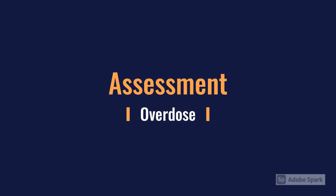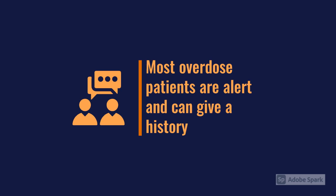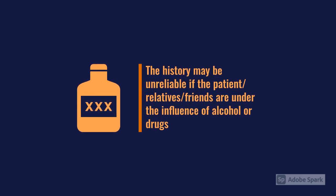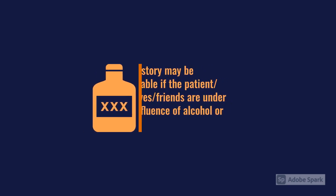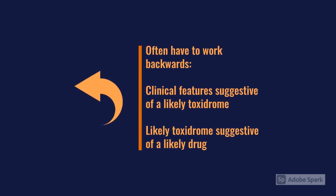A lot of our overdose patients are alert and can tell you exactly what they've taken, but there's a subset who are unconscious and the history you do get is unreliable - often from chaotic lifestyles, frequently with co-ingested alcohol. With a low GCS patient and an intoxicated relative, you can't be sure how accurate the history is. So we often have to work backwards looking at the toxidrome - assess the patient's features and work out what the likely causative drug is.